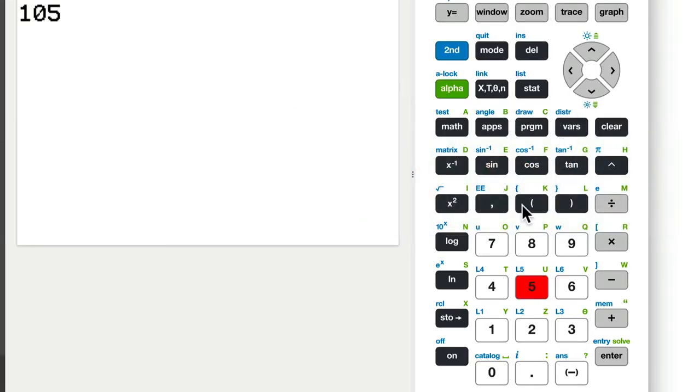And then negative 105 plus 37. Let's do it here. I'm just using the calculator right now. Negative 105 plus 37. Negative 68. All right.